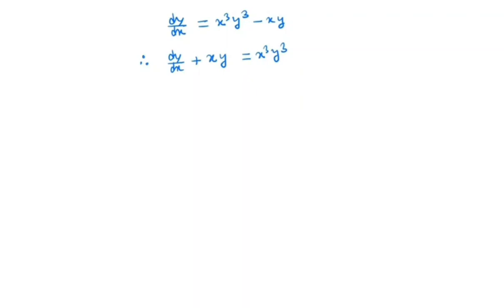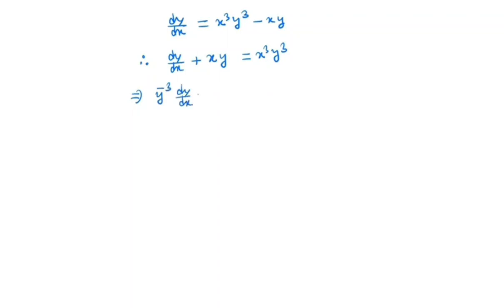In this method, first we will divide both sides by y³. So we have y⁻³ dy/dx minus xy⁻² is equal to x³.